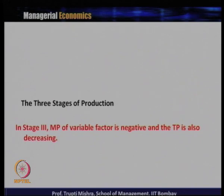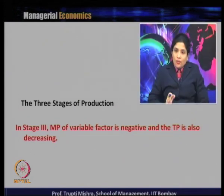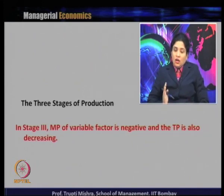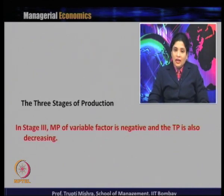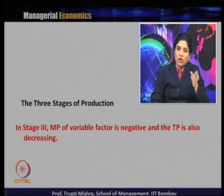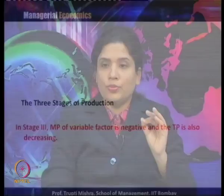In Stage 3, the marginal product of the variable factor is negative and total product is also decreasing. This means there is overuse of both inputs — whether machine or worker, capital or labor — and that is why total product is decreasing and marginal product is negative. In Stage 1, the producer underutilizes one resource; in Stage 3, they overutilize it. It is not rational to operate in Stage 3 because total product is decreasing and marginal product is negative — adding more labor units contributes nothing positive to total product.